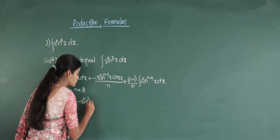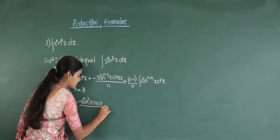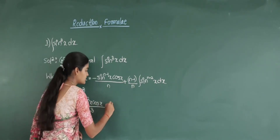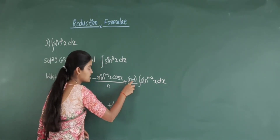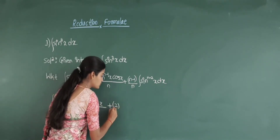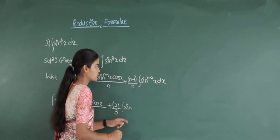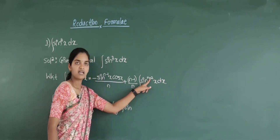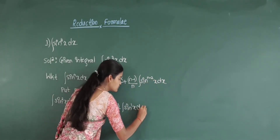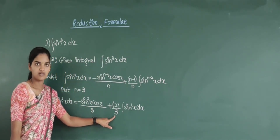...that is 3 minus 1, which is sin square x, cos x divided by n equal to 3. Then plus n minus 1 means 3 minus 1, that is 2, divided by 3, then integration of sin raised to 3 minus 2 — that is 1 — into dx. So this is our formula applied.